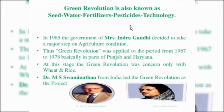Generally, the green revolution in India was started in the year 1965, and it was an initiative of the government of India. At that time, the prime minister of India was Mrs. Indira Gandhi. The green revolution was applied from the period of 1967 up to the year 1978. The green revolution was most effective in areas like Punjab, Haryana, and some parts of Uttar Pradesh.